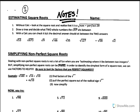Follow along in your notes. Number 1: without a calculator, look at the square root and realize it's not a perfect square root. Is the square root of 4 a perfect square root? No, it's not, because the square root of 4 is 2. You're going to draw a tree and decide what two whole numbers the non-perfect square root sits between. The square root of 36 — is that perfect? Yeah, because it's a whole number — it's positive or negative 6.